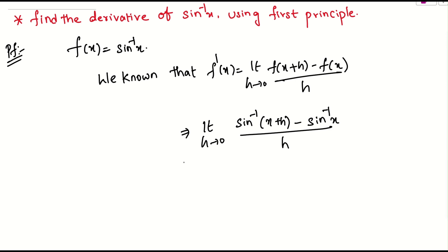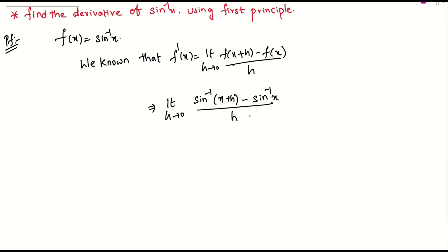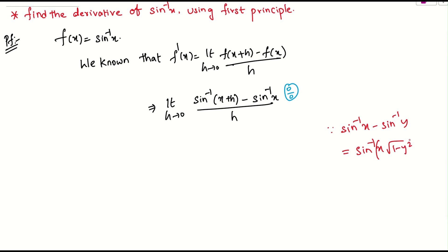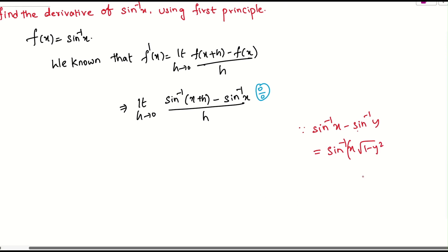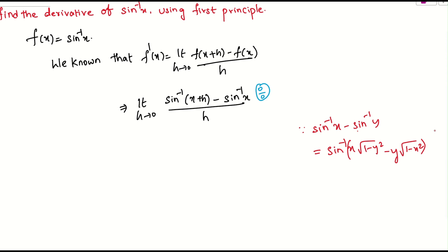If we directly substitute h equals to 0, we will be getting sine inverse of x minus sine inverse of x — a 0 by 0 form. So to avoid that, we need to remember the formula for sine inverse of x minus sine inverse of y. This is nothing but sine inverse of x into root of 1 minus y square, minus y into root of 1 minus x square. The same formula I will be applying here.